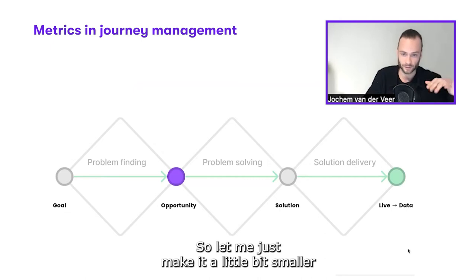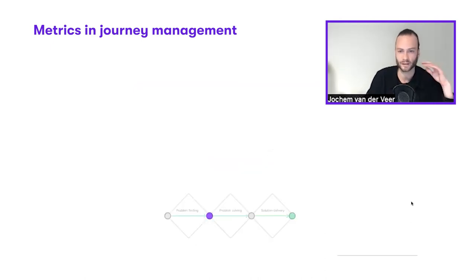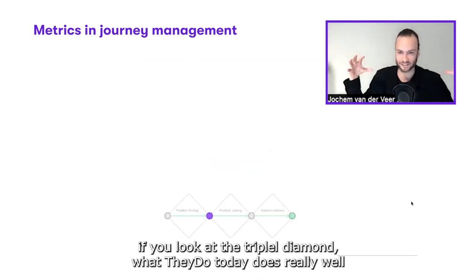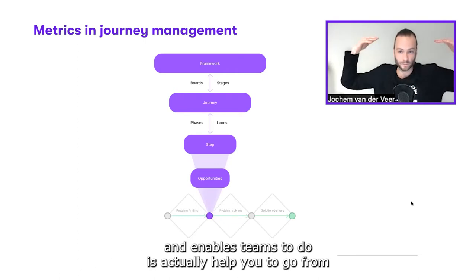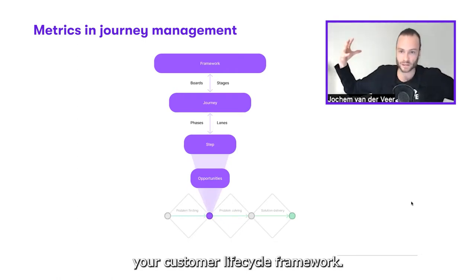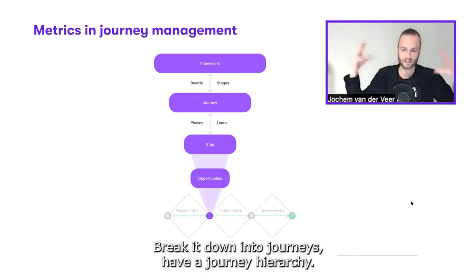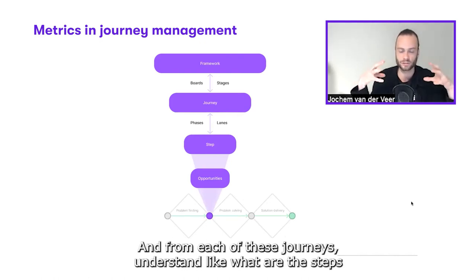Let me make it a little bit smaller. If you look at the triple diamond and what TheyDo does today, it enables teams to help you go from your customer lifecycle framework, break it down into journeys, have a journey hierarchy.